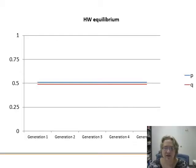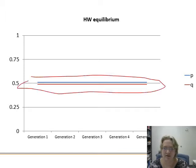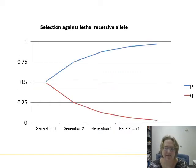Dominant alleles don't always become fixed. If there's no pressure for a dominant allele to do better, it'll just sit there. There has to be some sort of selective pressure going on — like a lethal recessive driving it.